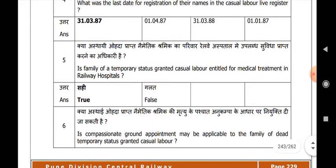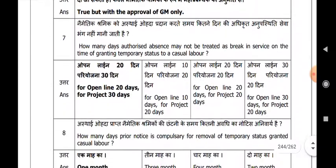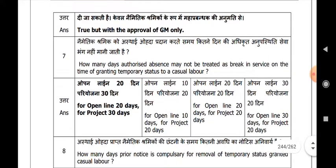Is compassionate ground appointment applicable to the family of a deceased temporary status granted casual labour? True, but with the approval of GM only. How many days of authorized absence may not be treated as break in service at the time of granting temporary status to a casual labour? For open line, 20 days; for project, 30 days.